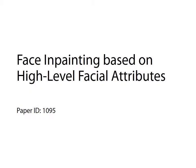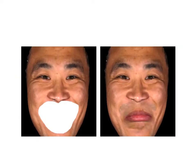We present an approach for face inpainting based on high-level facial attributes. Humans can detect even the slightest unnatural appearance in a face, making face inpainting particularly challenging. Here is a happy face which is inpainted with a sad mouth, resulting in a weird look.